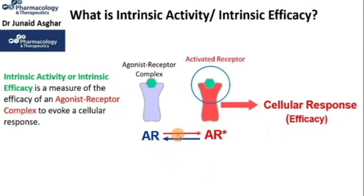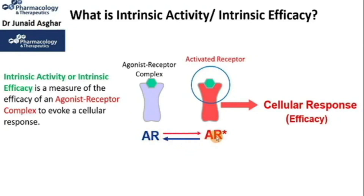The double arrows represent the rate of association and dissociation of agonist and receptor. The forward arrow represents the rate of association between an agonist and the receptor, while the backward reaction represents the rate of dissociation of the agonist-receptor complex. At equilibrium, the rate of association equals the rate of dissociation of the agonist-receptor complex, as discussed in the last lecture.